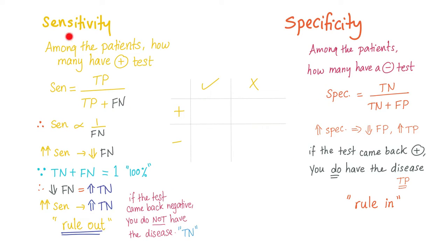Now let's talk about a big topic: sensitivity versus specificity. I'll explain briefly, because I intend to discuss these issues in a later video on biostatistics. Sensitivity — what's the definition? Among the patients with the disease, how many have a positive test?